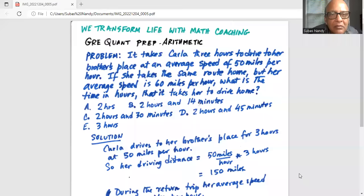So let's get started. It takes Carla three hours to drive to her brother's place at an average speed of 50 miles per hour.